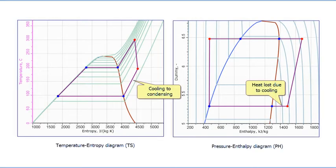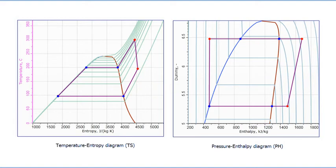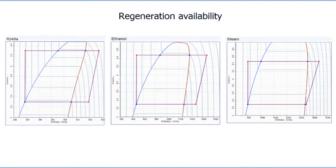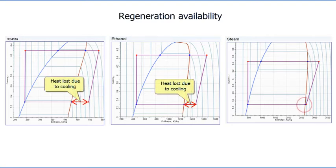In the Rankine cycle, the amount of heat corresponding to fluid cooling and condensing is lost, which decreases cycle efficiency. If the loss of condensing heat is inevitable, then part of the heat lost during cooling may be used for regeneration. It is noticeable that cycles on different fluids have different regeneration availability. There are resources for regeneration in R245fa and ethanol cycles, while the water cycle, at least for a one-stage configuration, is not suitable for regeneration.